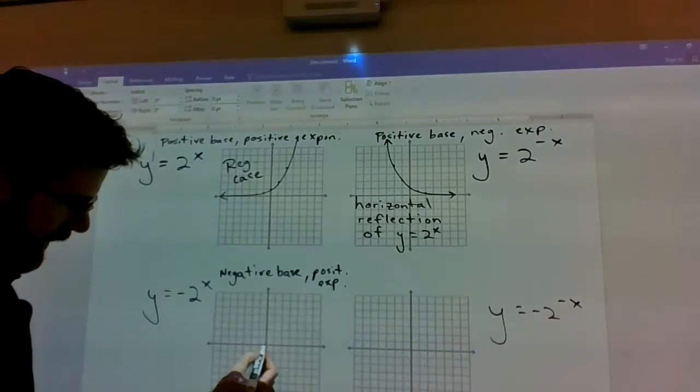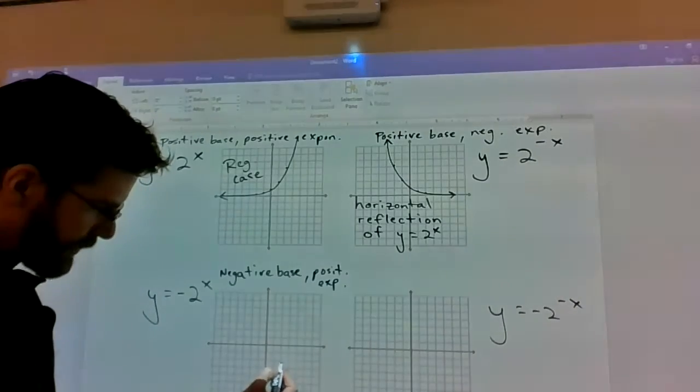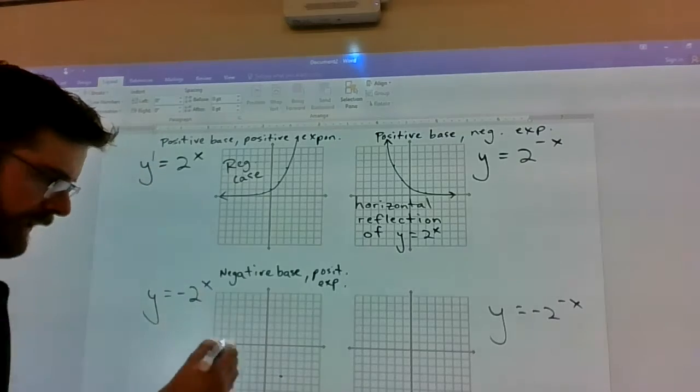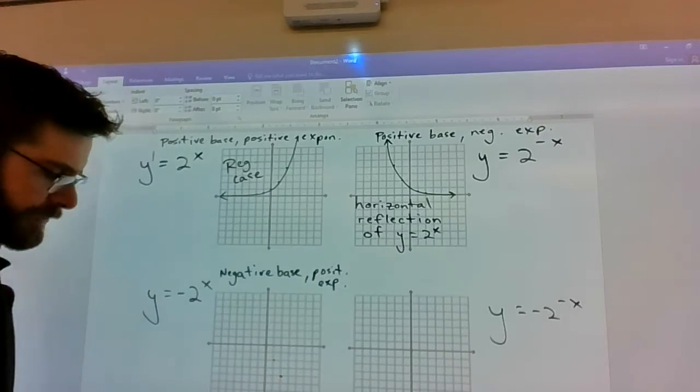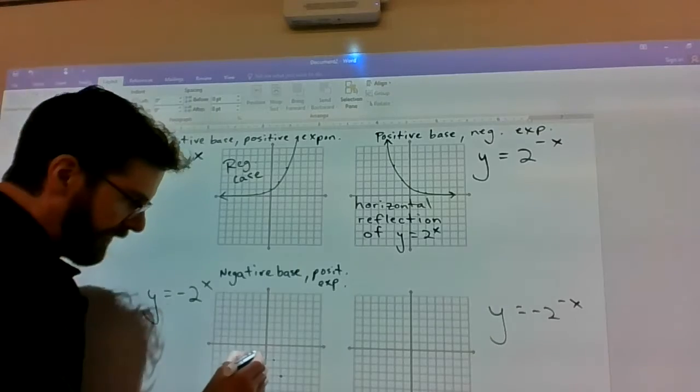So if I plug in a 2, I get 1, 2, 3, 4 below. If I plug in a 1, I get negative 2 to the 1 power below. And then negative 1, negative 1/2, negative 1/4.